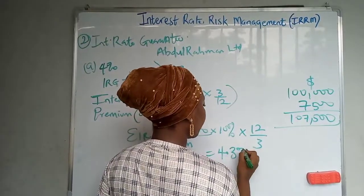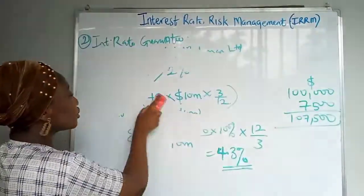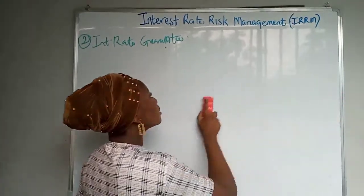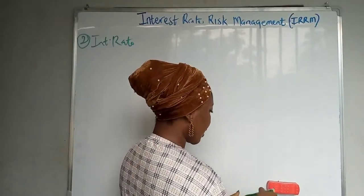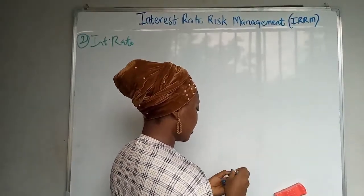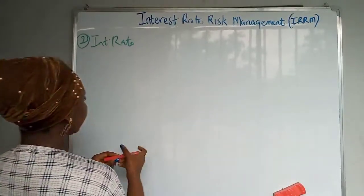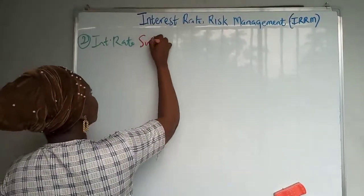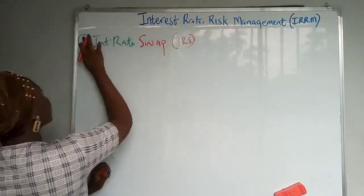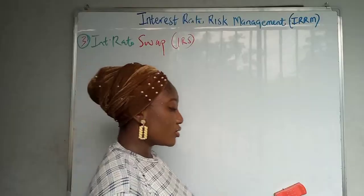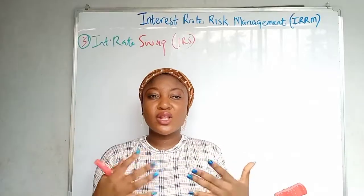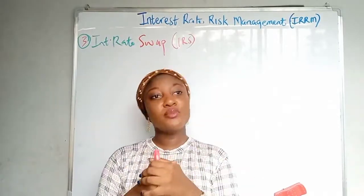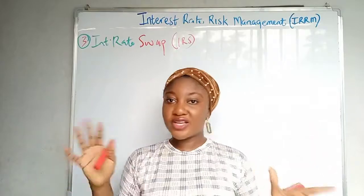Now let's move to the third method: the interest rate swap, or IRS. In this method, two companies — two debtors — are swapping. The bank looks for two debtors who each need a particular type of interest rate, since companies can borrow at either fixed interest rates or floating variable rates.